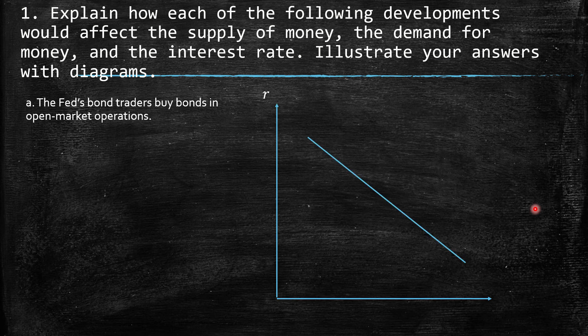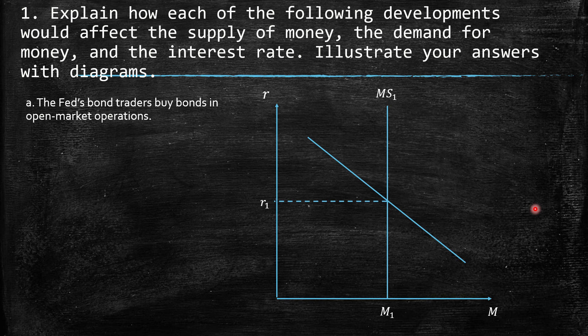Keep in mind that we have the interest rate on the y-axis. Then we have the demand, which is downward sloping, and the money supply is perfectly inelastic — so it's vertical. Here we have the monetary supply, the equilibrium interest rate, and the quantity of money on the x-axis. When there is an open market operation of buying these assets,